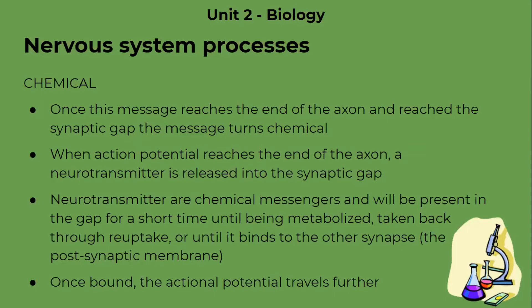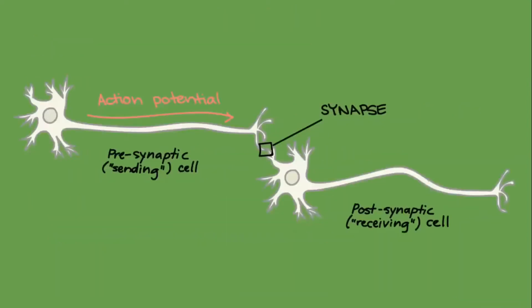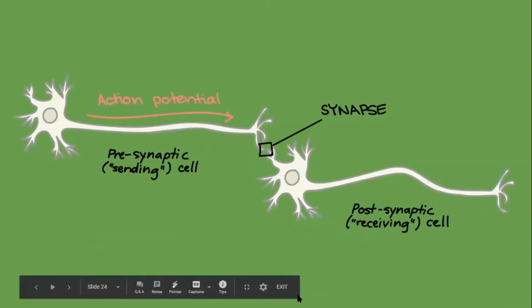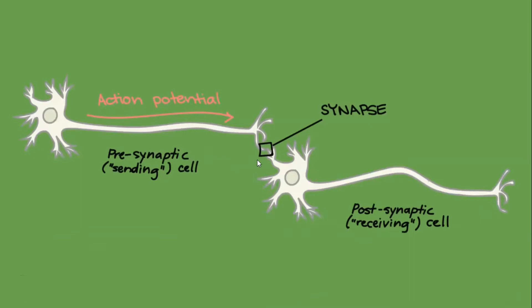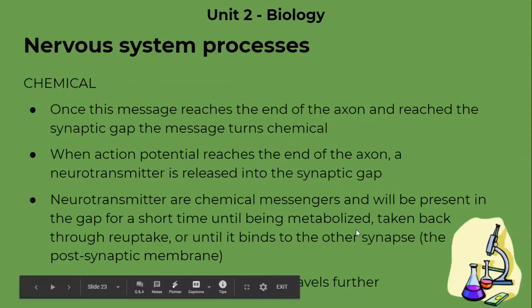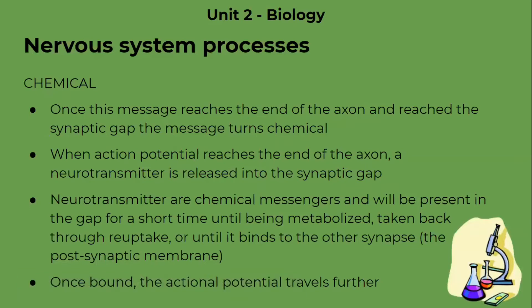Now for the chemical processes that occur. We have the synapse, which is the end of the axon and the beginning of a dendrite. The synapse is that conjunction between two neurons. From the dendrites and the soma throughout the axon until the synapse is going to be all electrical. The action potential travels from the sending cell, and the receiving cell will be on the other side of the synapse. That little conjunction will involve the chemical response. Once the message reaches the end of the axon of the sending cell and reaches the synapse, we convert the message from electrical to chemical.